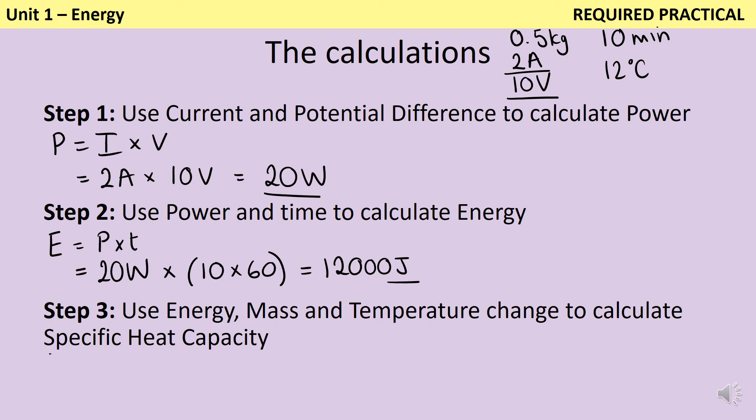And then finally, I'm going to use my specific heat capacity equation to work out what the specific heat capacity is. I'm going to need to rearrange this. So specific heat capacity is the change in energy divided by the mass multiplied by the change in temperature. So I've just worked out that the energy was 12,000 joules, and I'm dividing that by my mass, which was 0.5 kilograms, multiplied by my temperature change, which was 12. That's going to give me an answer of 2000 joules per kilogram degree C.